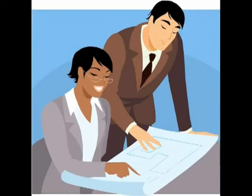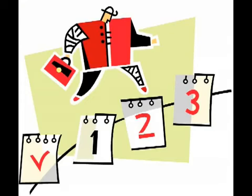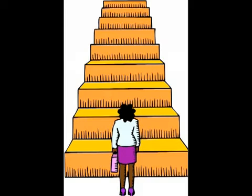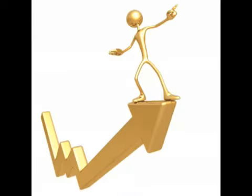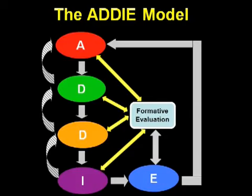It is systematic in that each step has an outcome that feeds into the next step in the sequence, and each stage is reliant on the successful completion of the previous stage. This video provides a brief introduction to the ADDIE model.